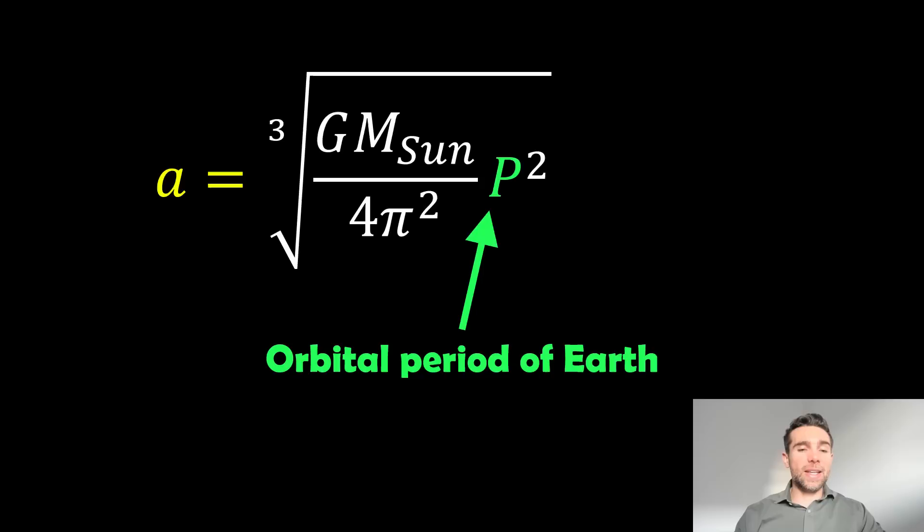What we then need to do is put it in terms of just the semi-major axis, so we take the cube root. This p is the orbital period of the Earth which we can calculate relatively straightforward.